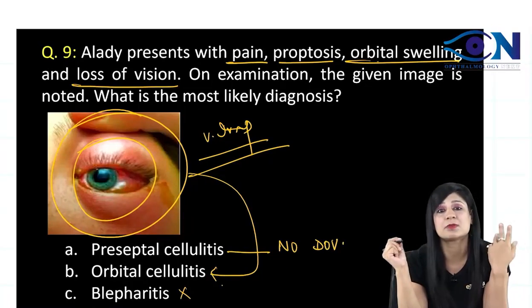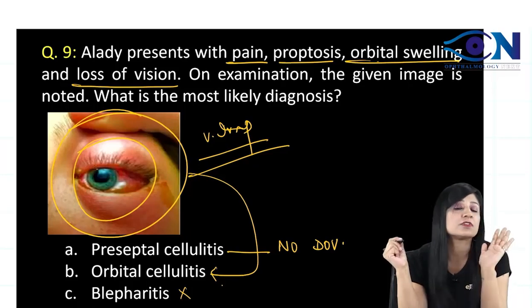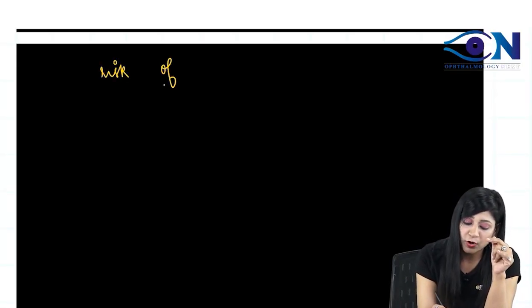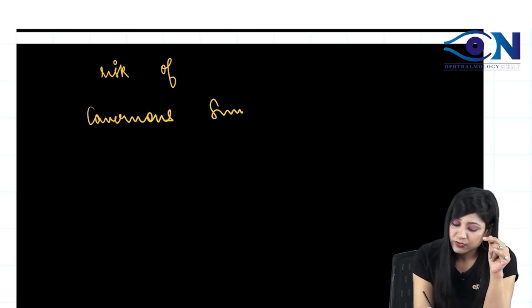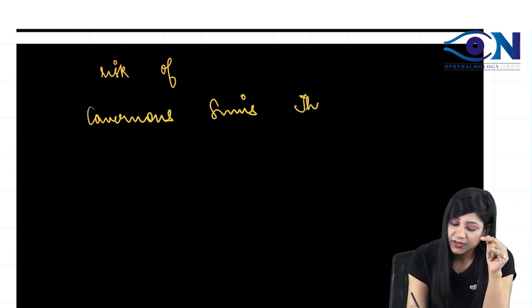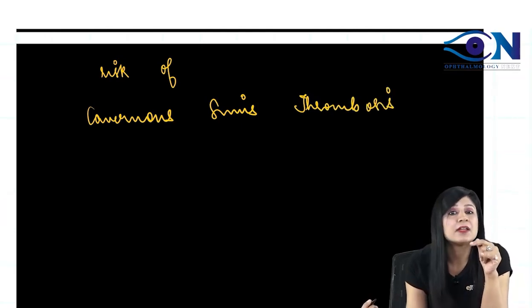So pain, proptosis, and diminution of vision typically go with orbital cellulitis. Now, why is orbital cellulitis important? Because we have a risk of cavernous sinus thrombosis. That is why we are worried about it.